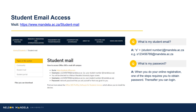Student Email Access: Email being the institution's primary medium of communication, we advise that you set up your email address as soon as possible. Please visit the link provided on screen to access your student email. Your student email address begins with the letter S for student, followed by your student number, at mandela.ac.za. The password requested would be the one obtained or created in Step 11 of this registration process.